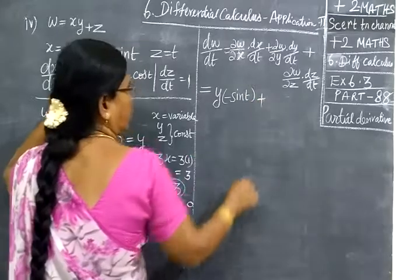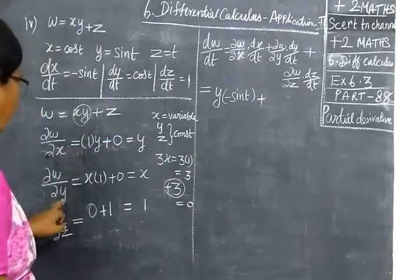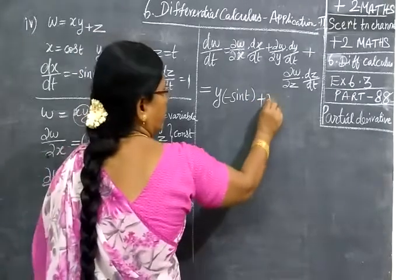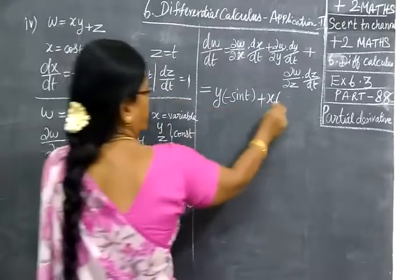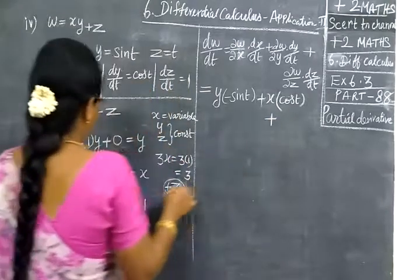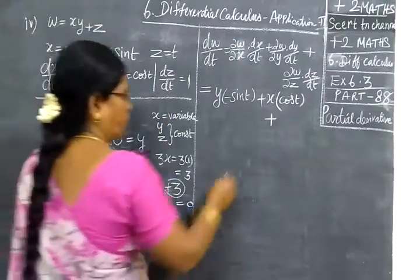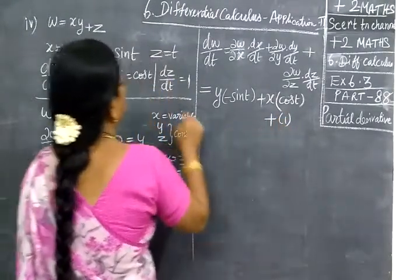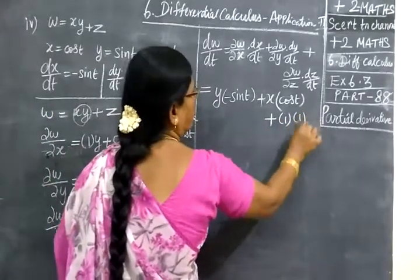So plus ∂w by ∂y, then dy by dt cos t, then plus ∂w by ∂z which is 1, then dz by dt is 1.